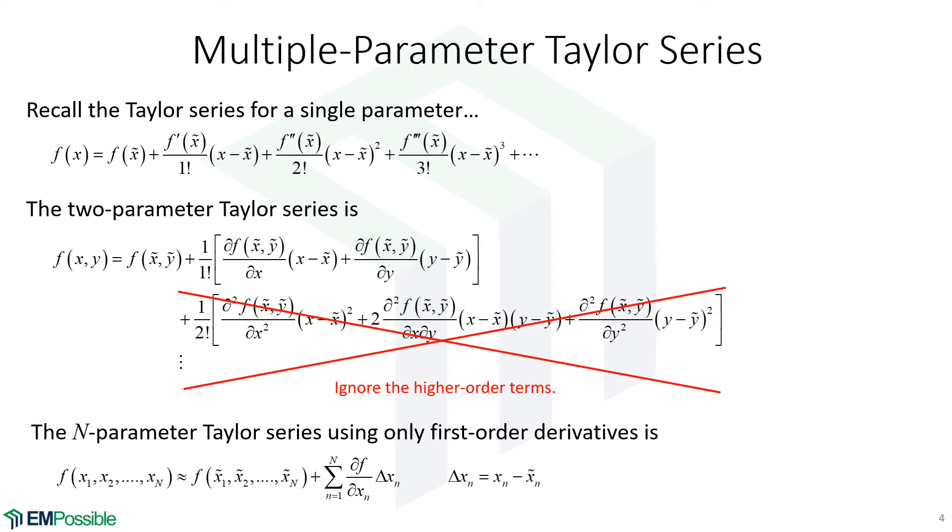So we don't necessarily need an exact Taylor series here. So we will proceed with the n parameter Taylor series written as what we're showing below. And here's our n parameters that we're writing. X1, X2, all the way up to Xn. And our original function plus a summation of, and each one of the terms in here is our function differentiated with respect to each one of these independent variables times the change in that independent variable. And the way we're defining this change is our measured value minus this value that we're calculating the Taylor series about.